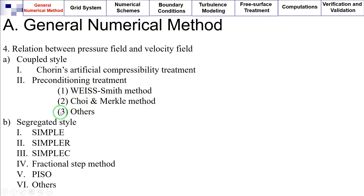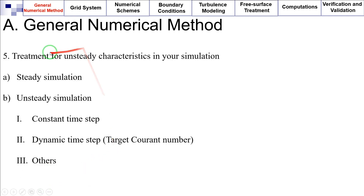Or a segregated style, which can be based on the SIMPLE algorithm, SIMPLER, SIMPLE-C, fractional step method, PISO, or others, which you need to specify. What is the treatment for unsteady characteristics in your simulation? Is it a steady simulation or an unsteady simulation, in which a constant time step or a dynamic time step based on the target Courant number is used, or others which you need to specify?